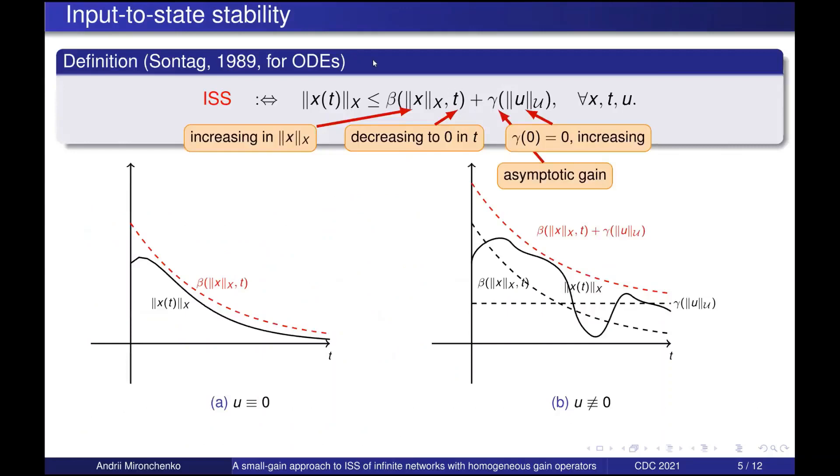Having fully defined the notion of an infinite network, we can proceed to stability analysis. We say that the system is input to state stable or shortly ISS, if the norm of the trajectory can be upper bounded as a sum of two functions. Function beta, which increases in the first argument and decreases to zero in the second one. And function gamma describing the influence of external inputs. This function is zero at zero and increasing to infinity. It is also called asymptotic gain.